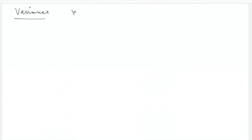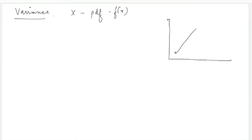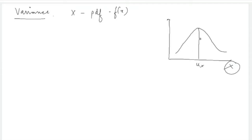Now, variance of a continuous random variable. Variance tells you how spread out the distribution is — how far the individual values of the random variable are from the mean. A compact distribution has values very close to the expected value, while a wider distribution has values more distant from the mean.